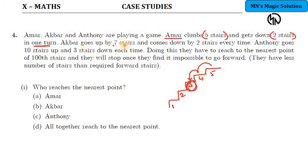Same thing - Akbar is climbing totally seven stairs and then comes down by two stairs. So in one turn Akbar goes up by how many stairs? Five stairs, seven minus two which is five. Same thing Anthony - ten stairs up and three stairs down. So each turn he is able to climb up seven stairs.